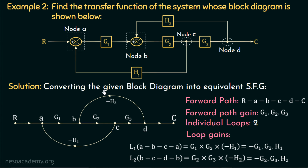Now, what is the number of non-touching loops in this SFG? There are no non-touching loops. There are two loops: A-B-C-A and B-C-D-B. We can see that nodes B and C are common in these two loops, and that's why they are touching loops — not non-touching loops. So the number of non-touching loops in this signal flow graph is equal to zero.